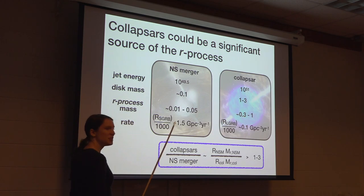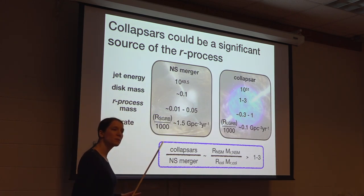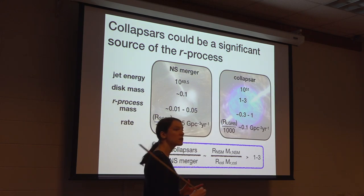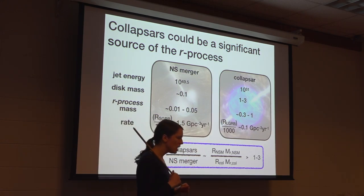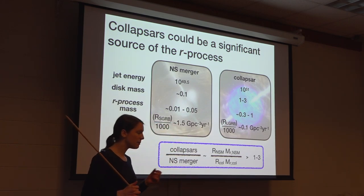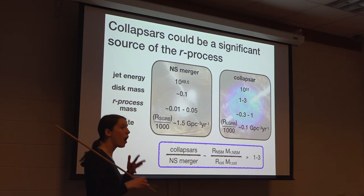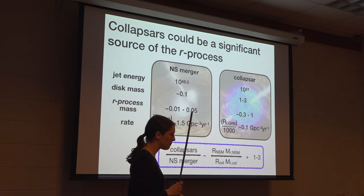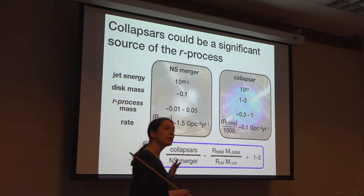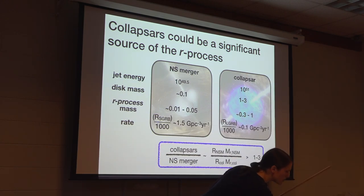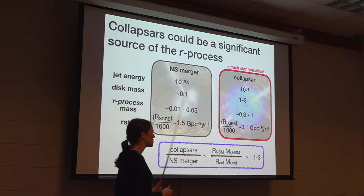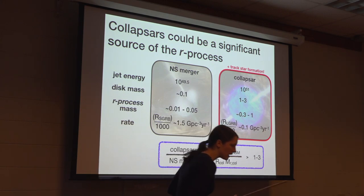If you believe that collapsar disks could be capable of producing R-process material, we can do some simple estimates to understand how important a source they could be. From simulations and our understanding of progenitor systems, we estimate that collapsar disks should be much more massive than disks formed in neutron star mergers. Since similar physical processes are at play in unbinding material, they should both unbind a comparable fraction of total disk mass. Combining this estimate with observed rates from short and long gamma-ray bursts, it looks like collapsars could at least be comparable to neutron star mergers as R-process sources. An additional bonus is that because collapsars are core-collapse supernovae, they track star formation, and can very naturally explain the presence of R-process elements in the early universe.